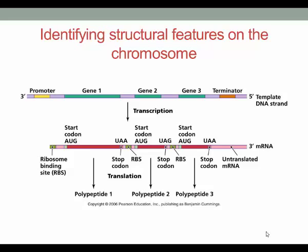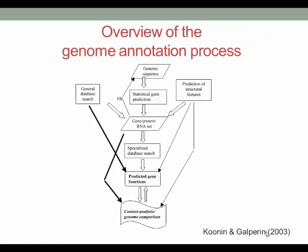After a genome is sequenced, the data are run through a variety of automated programs that predict the function of open reading frames. This flowchart outlines the process of annotating a genome sequence. First, statistical gene predictions are made — bioinformatics tools such as GeneMark or Glimmer are used to predict protein-coding genes. Feedback from gene identification can then be used to correct sequencing errors, primarily frameshifts. Then, general sequence databases are searched for homology or similar sequences, usually using BLAST or a BLAST-based program.